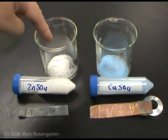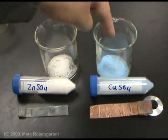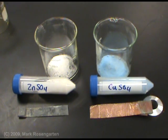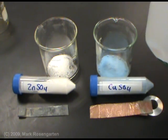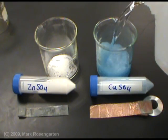In this beaker, we have some zinc sulfate. In this beaker, we'll have copper sulfate. To put the ions into solution, we'll simply dissolve them in some distilled water.